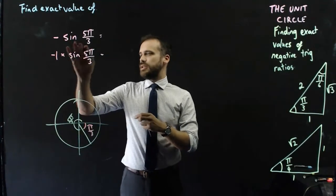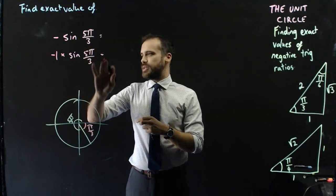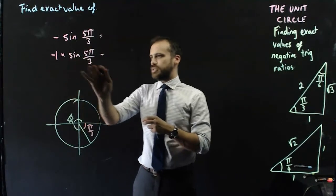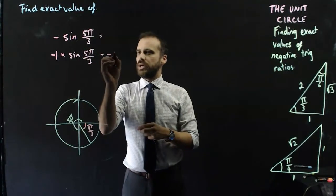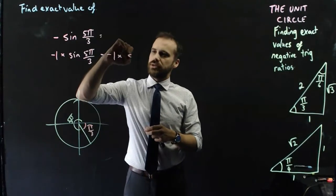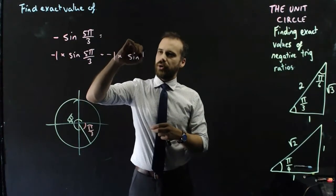So, now I can say that negative sine 5π/3 is equal to negative 1 times sine 5π/3, which is equal to negative 1 times sine π/3.